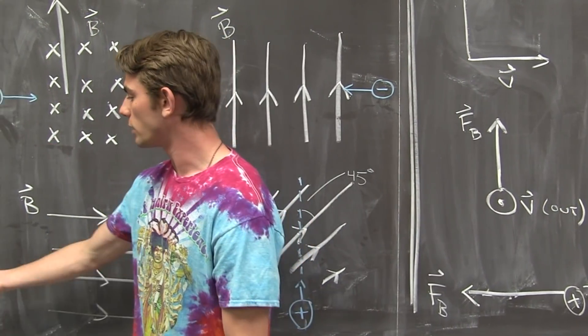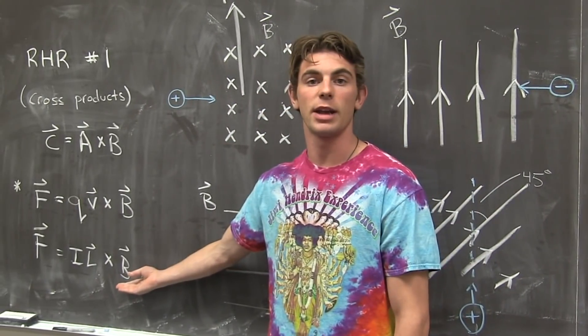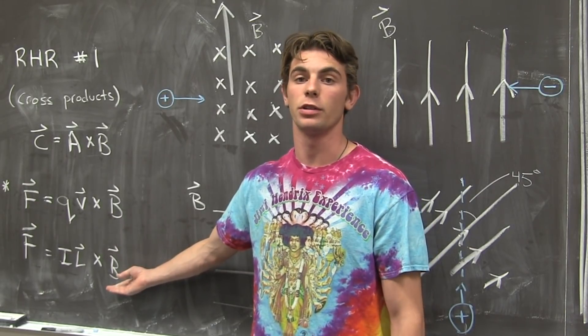Now, for the second cross product equation, the ones with currents and magnetic fields, here are three examples for you to try out.